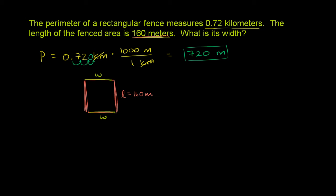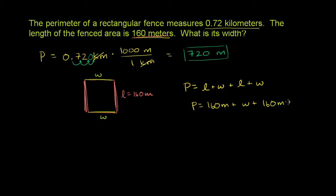The perimeter is the measure going around it. So the perimeter is going to be this length plus this width, plus that same length again, plus that width over there. Another way to think about it: the perimeter equals length plus width plus length plus width. We know the length, so: 720 meters equals 160 meters plus the width, plus 160 meters, plus the width.